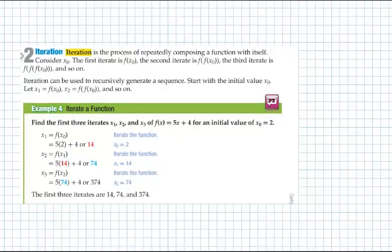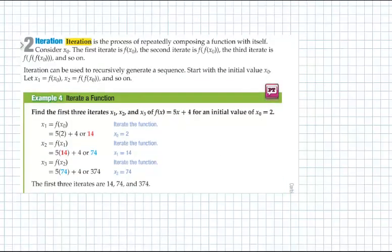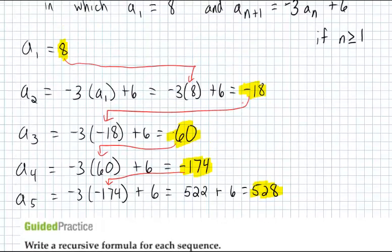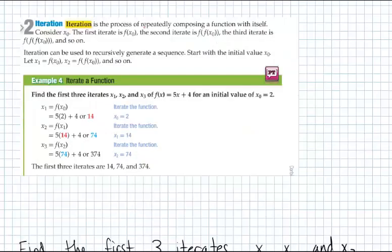The last thing in this section is iteration. Iteration is a lot like what we were just doing. This is kind of an example of iteration, what we did up here, where we took the term, our output from the last one, plugged it into the next one. That's essentially what using a recursion formula is if you're generating multiple terms. It says repeatedly composing a function with itself. So what you're doing is taking the output and plugging it right back into the same function.